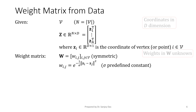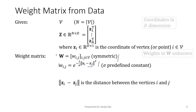This is how we compute the weight matrix. It must be symmetric, and wij is given by this expression: it is equal to e to the negative 1 over sigma times this norm squared, where sigma is a predefined constant. Noting that the norm of the difference between zi minus zj is the distance between vertex i and vertex j, we can see that wij is higher when zi and zj are closer.